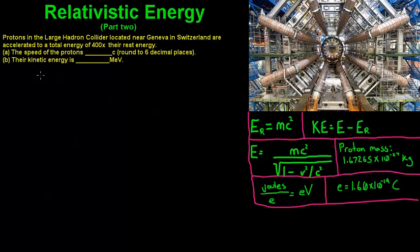Hi guys. Today we're picking up back where we left off on relativistic energy, and this is part two. Over here we've got the Large Hadron Collider near Geneva, Switzerland, and we've got protons that are accelerated to a total energy of 400 times their rest energy. We need to find the speed of the protons in units of c, rounded to six decimal places. For part B we need to find their kinetic energy in megaelectron volts.